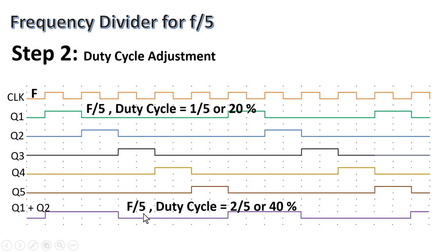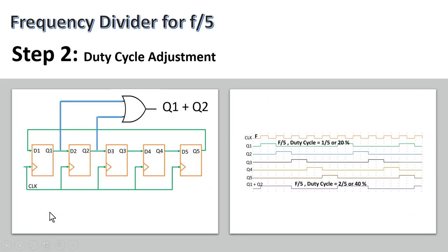Let us see the final logic circuit diagram of the clock frequency divider to get frequency F by 5 with a 40% duty cycle. We use a 5-bit ring counter with 5 flip-flops and place an OR gate on Q1 and Q2 to get our final output.